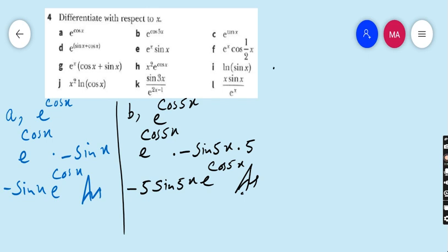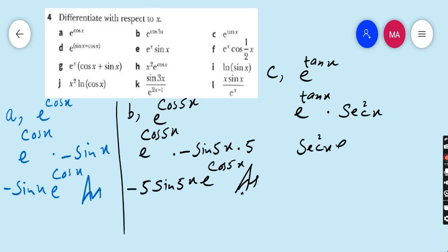Move to part C. Part C is e^(tan x). The derivative of e^(tan x) is e^(tan x), but multiplied by the derivative of tan x, which is sec² x. So sec²x · e^(tan x) is our final answer of part C.